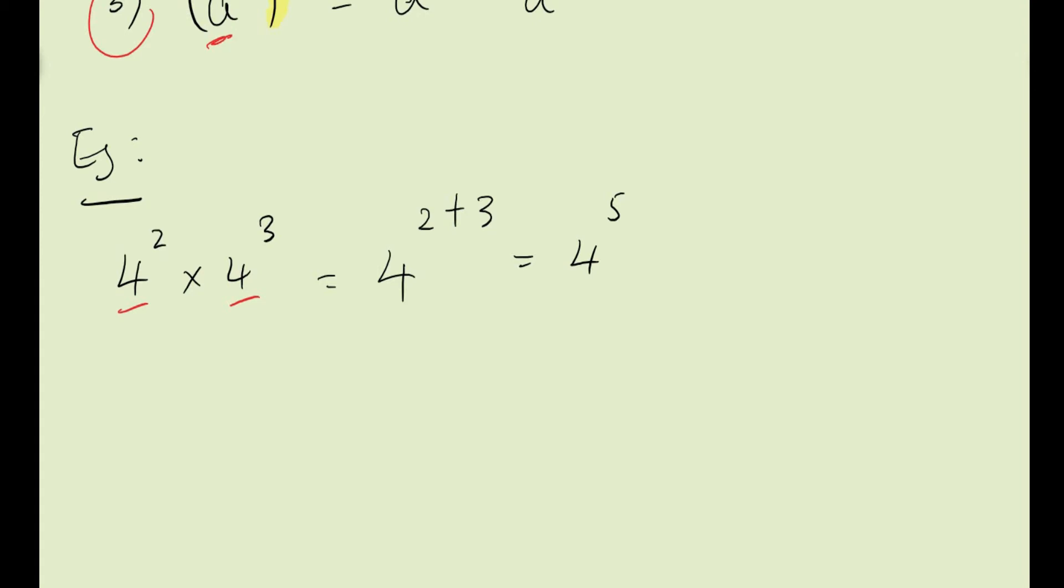The same thing goes for this example here. You have 2 power 6 divided by 2 power 3. Because you have the same base and it's a division, you can actually subtract the power based on the law of indices. And then you have 2 power 3. Even without using a calculator you know that 2 power 3 is equals to 8.